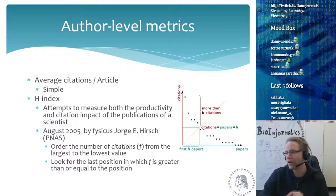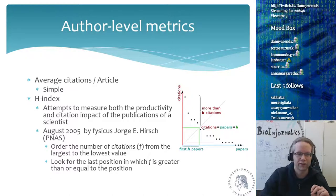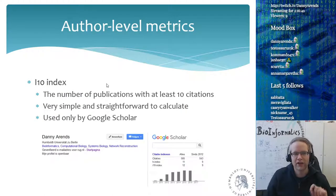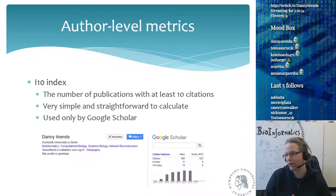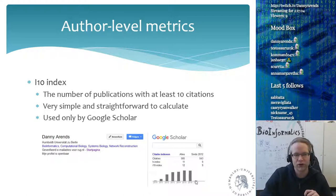Only when your second paper also gets cited does your h-index start climbing. As soon as your second paper hits two citations, your h-index becomes two. Besides the simple h-index, there is also the five-year h-index, which only considers publications from the last five years — anything older is ignored. There is also the i10-index: the number of publications with at least 10 citations, very simple and straightforward to calculate, though it is only used by Google Scholar.